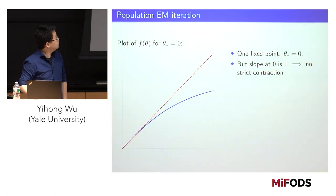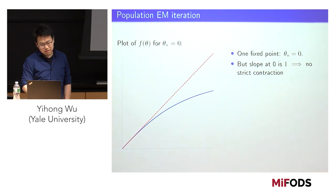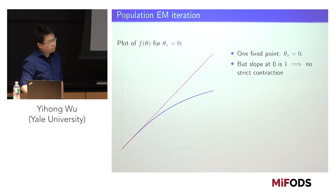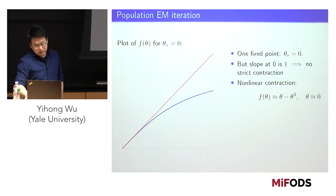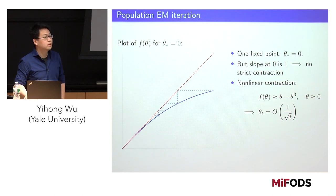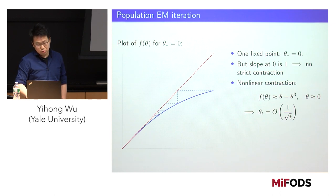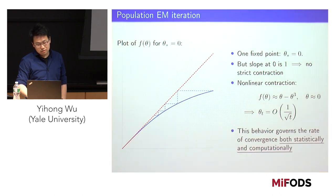When theta star equals zero, the two fixed points merge. It's not possible to prove strict contraction in this case because the curve kisses the 45-degree line at zero. However, looking at the second-order term, there is a nonlinear contraction: you subtract a cubic term. Going down the staircase, it converges to a unique fixed point with convergence rate one over square of t — not linear convergence, much slower. This slow convergence can be attributed to the flatness of the likelihood at theta zero and the vanishing Fisher information, which are responsible for both the slow statistical rate and the slow convergence rate.